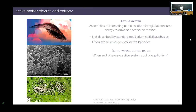A fundamental question that has emerged is: when and where are active systems truly out of equilibrium? For example, once a biofilm has settled and formed, is it really an equilibrium system in disguise? Can we use equilibrium stat mech to understand it, or is something fundamentally different happening? We would like to say whether it's an equilibrium system in disguise or a fundamentally new kind of system.